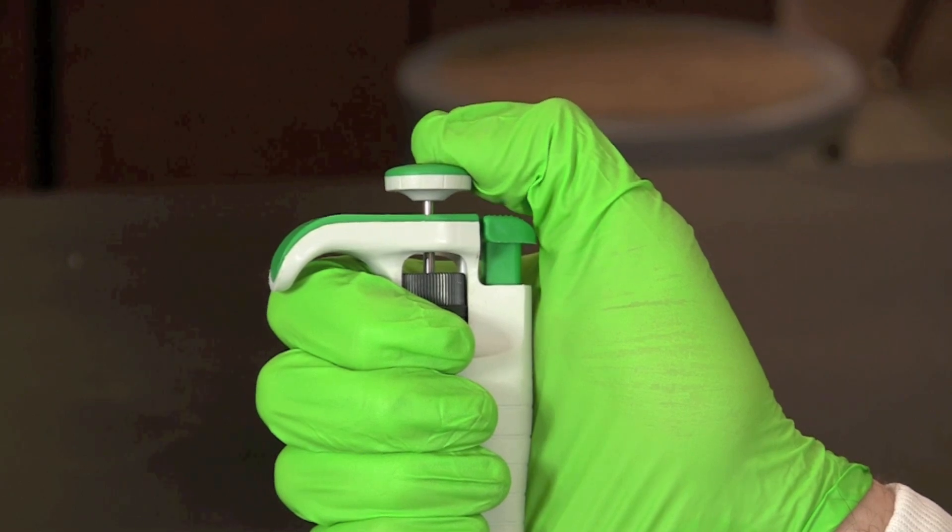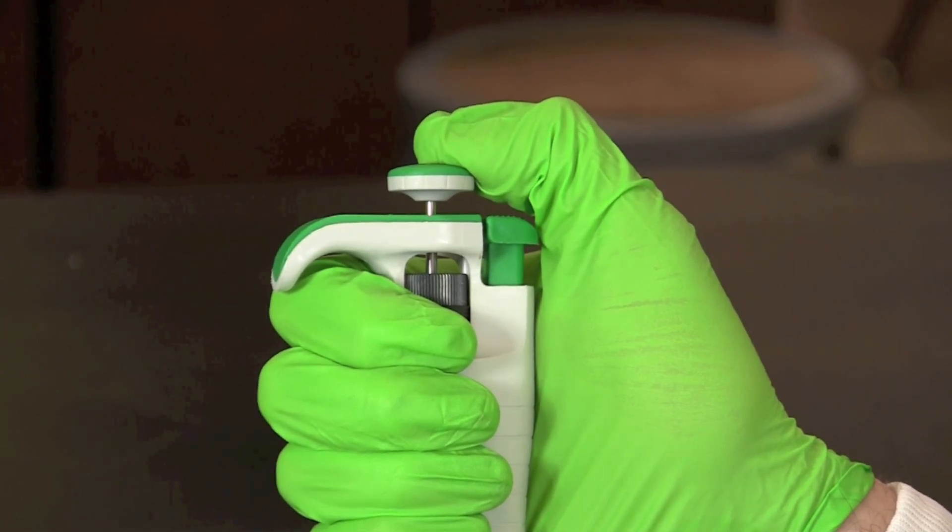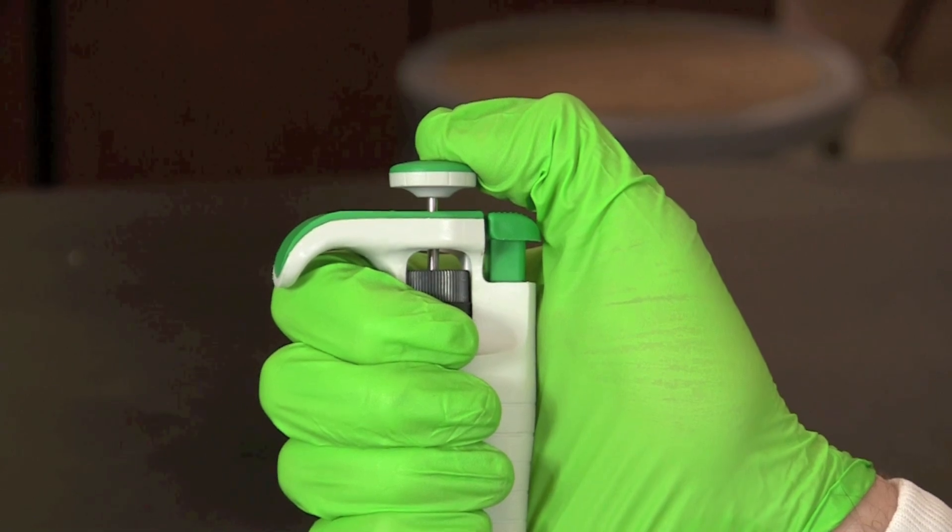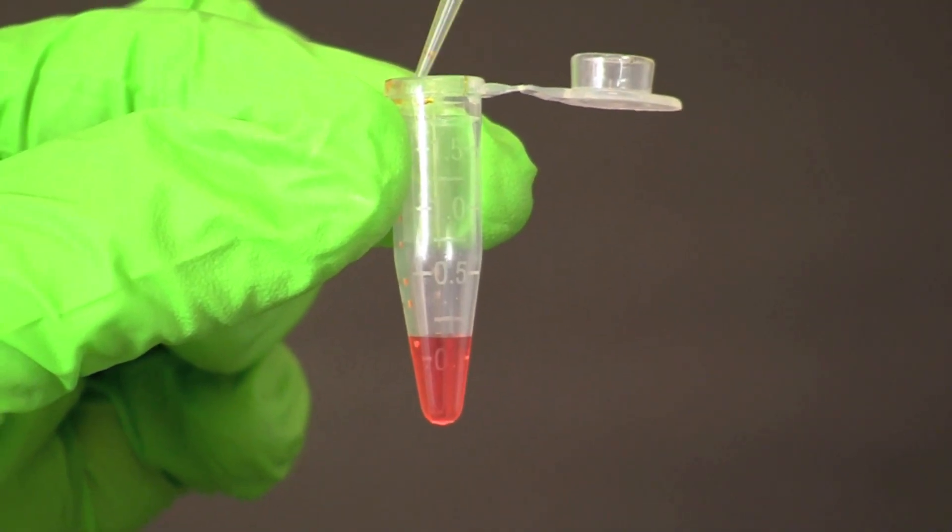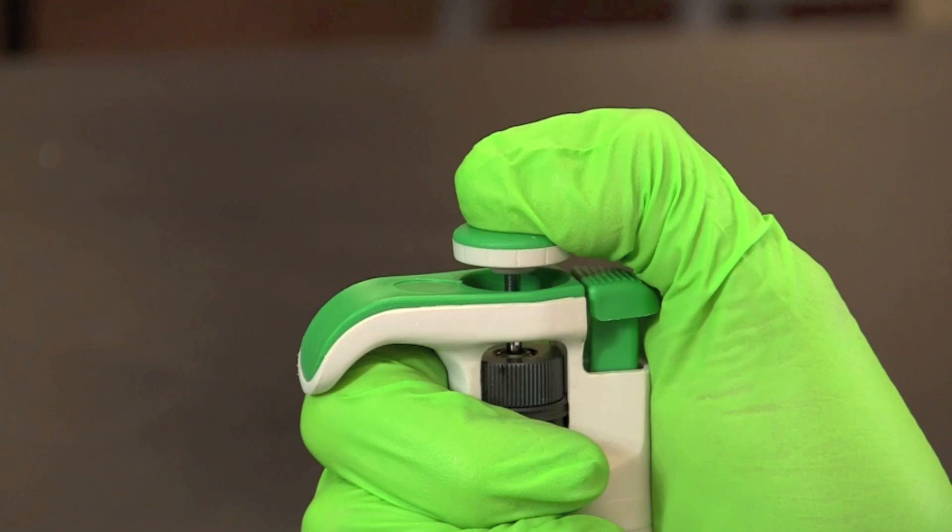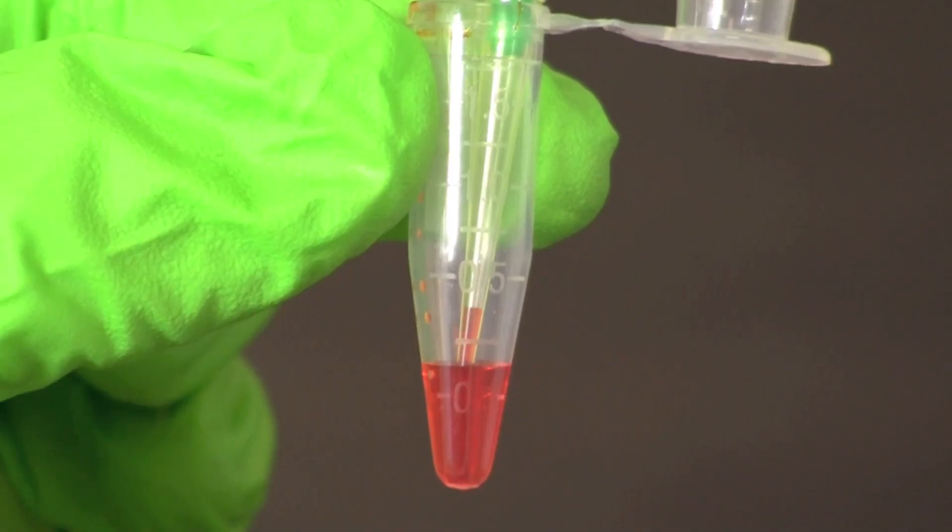To obtain a sample press the plunger button to the first stop and hold it there as you place the pipette tip into the tube holding your sample. Placing the tip near the bottom of the tube, withdraw the sample by slowly releasing the plunger button.